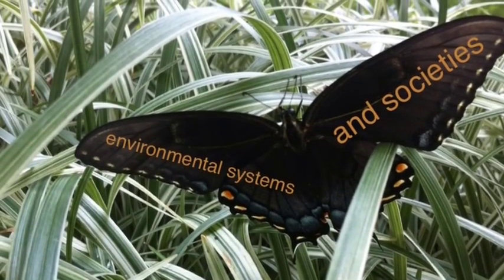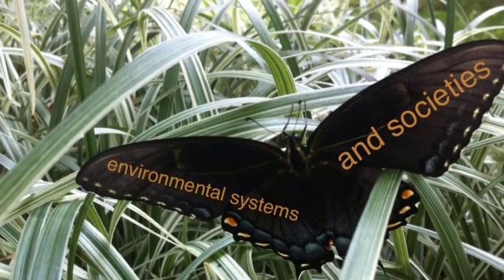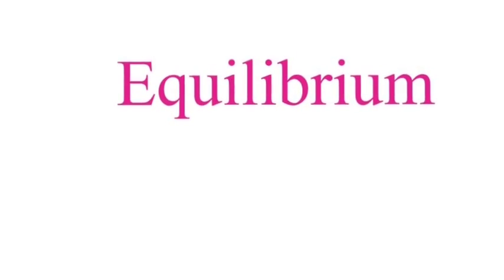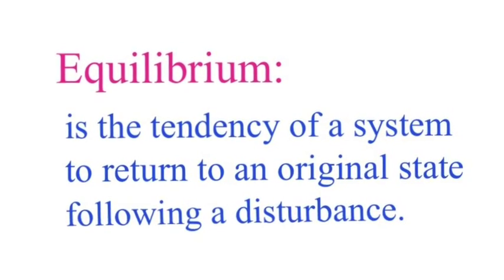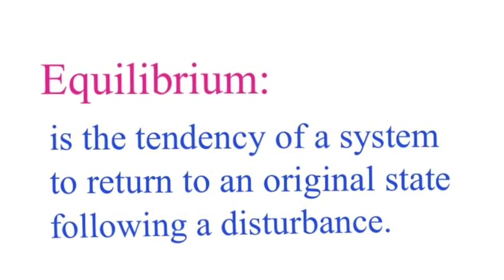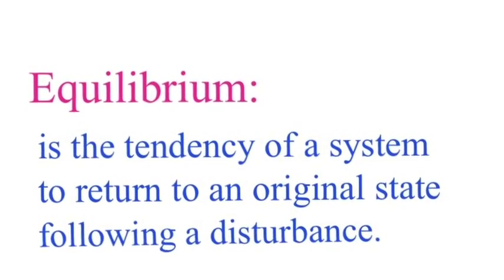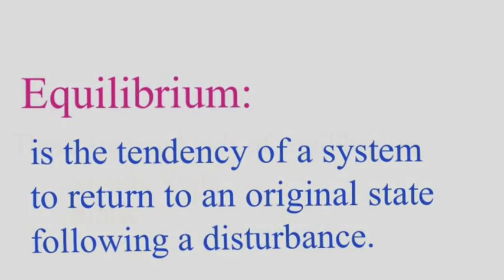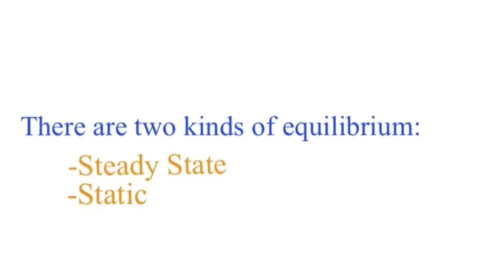Hello, nature lovers, and welcome to another exciting episode of Environmental Systems and Societies. Today, we're going to talk about equilibrium, which sort of implies balance. What is equilibrium? It really is the tendency of a system to return to an original state following some sort of disturbance. It's basically saying that it's going to return to where it started.